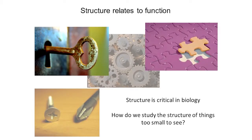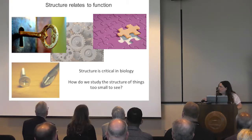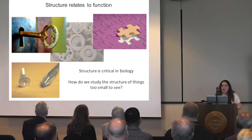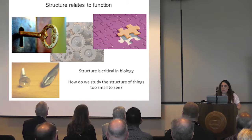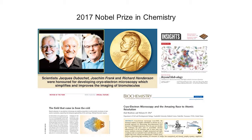Many of us know that structure relates to function. If we look at these household objects, it's very clear how the shape of the screwdriver is important — you can't use a Phillips head screwdriver for a flat head screw. The same is true in molecular biology, except the structures we're talking about are microscopic and based on the atomic level. Imaging structure really requires specialized equipment. In 2017, three scientists won the Nobel Prize in Chemistry for their contributions to cryo-electron microscopy as a way to look at molecular structure.